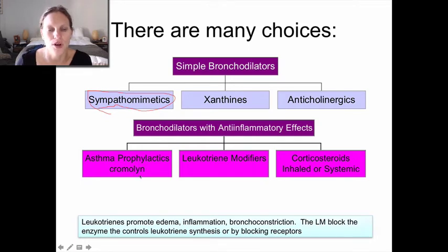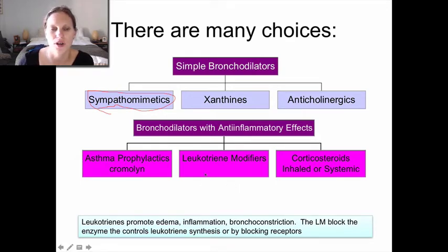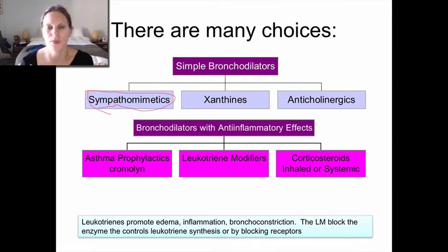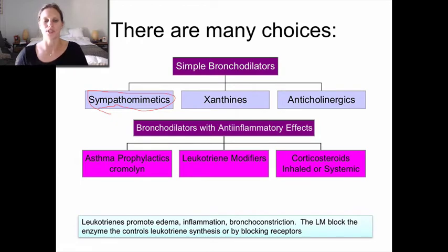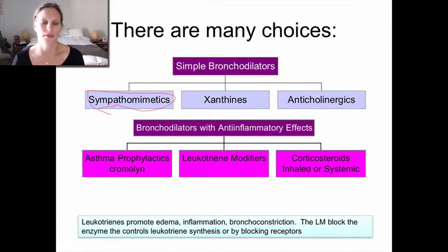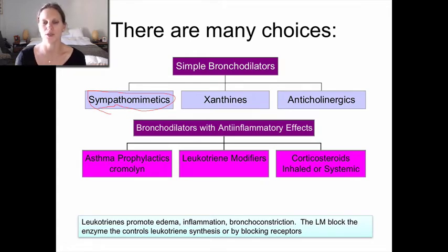Newer than cromolyn are the leukotriene modulators or modifiers — drugs like Singulair, which has gone over the counter. Leukotrienes are cytokine-like molecules that promote swelling, inflammation, and bronchoconstriction. These drugs either block leukotriene synthesis or block leukotriene receptors, inhibiting the message that promotes edema, inflammation, and bronchoconstriction. They work well but are better used prophylactically rather than in acute situations.